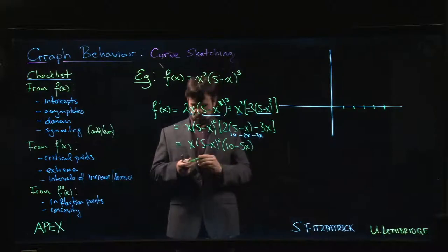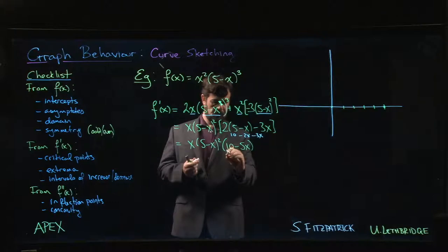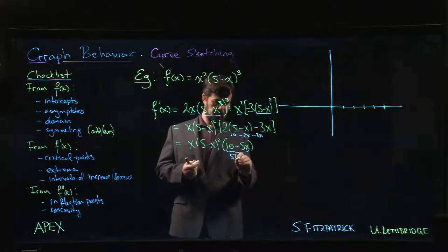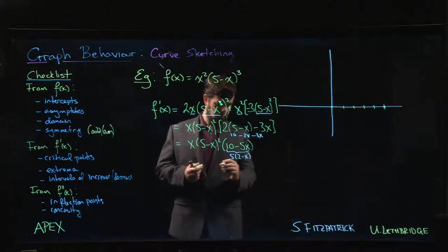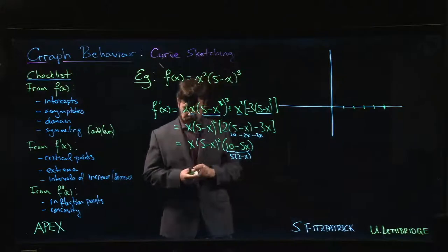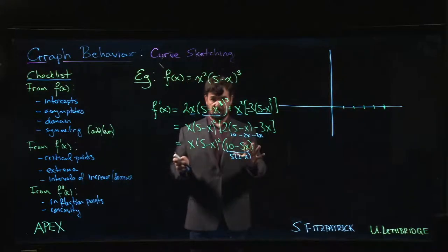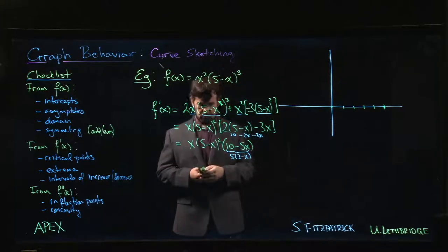We can go one step further and factor a 5 from (10-5x), giving f'(x) = 5x·(5-x)²·(2-x).